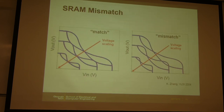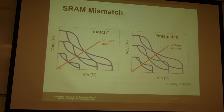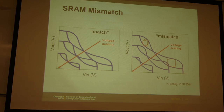As discussed before, the challenge for scaling is the noise margin, which we get from the butterfly curve for static noise margin. The challenge is that we may have a mismatch of transistors due to process variation. Those two squares in the butterfly curve may not be the same size, and the smaller one will be the bottleneck of the noise margin. With mismatch, we will have more challenges in scaling.